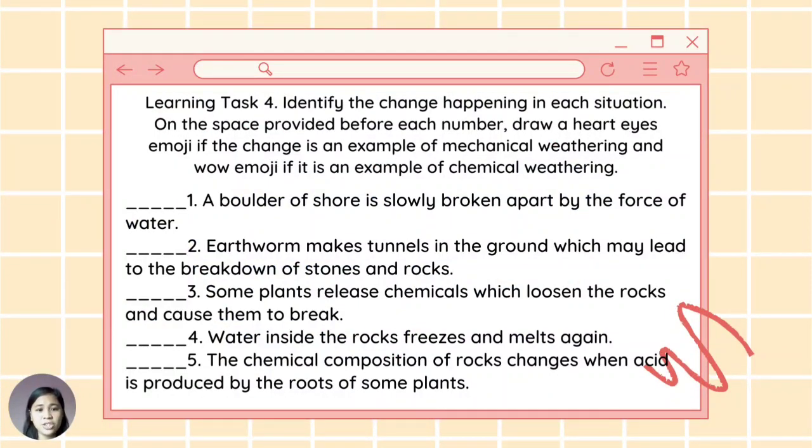For learning task number four: Identify the change happening in each situation. On the space provided before each number, draw a heart ice emoji if the change is an example of mechanical weathering, and wow emoji if it is an example of chemical weathering. For number one: A boulder offshore is slowly broken apart by the force of water. Number two: Earthworms make tunnels in the ground which may lead to the breakdown of stones and rocks. Number three: Some plants release chemicals which loosen the rocks and cause them to break. Number four: Water inside the rocks freezes and melts again. And number five: The chemical composition of rocks changes when acid is produced by the roots of some plants. And these are the correct answers. For number one: Heart emoji. Two: Wow emoji. Three: Wow emoji. Four: Heart emoji. And five: Wow emoji.